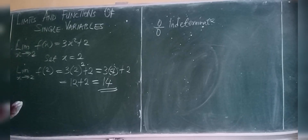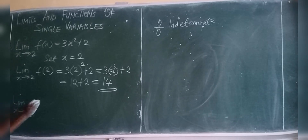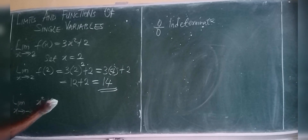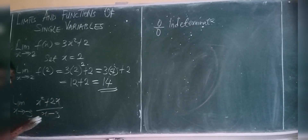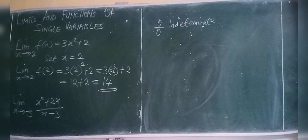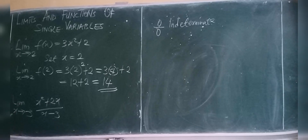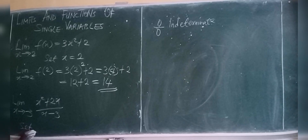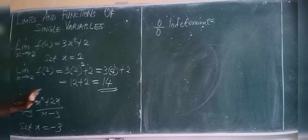Let's evaluate the limit as x approaches −3 of (x² + 2x) / (x − 3). We always test first by substitution — set x equal to the point the limit is approaching, which is −3. Wherever we see x in the expression, we substitute −3.